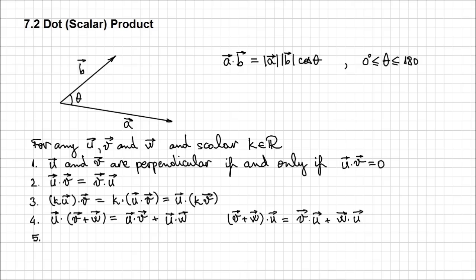The fifth property: the dot product between a vector and itself — U dot U — is equal to the magnitude of that vector squared. By the definition of the dot product, it's the magnitude of U times the magnitude of U times the cosine of the angle between them. Since it is the same vector, the angle between the vector and itself is 0, and cosine of 0 equals 1. And the dot product between a vector and the zero vector equals zero. These are properties you need to know to work with dot products.